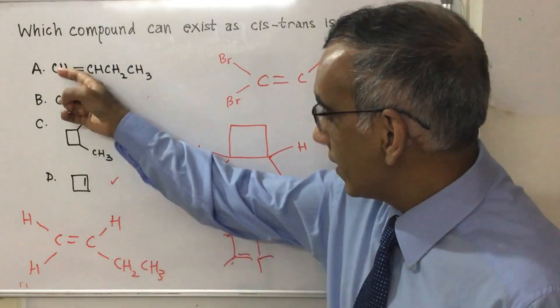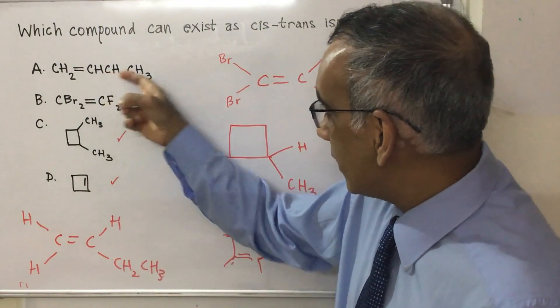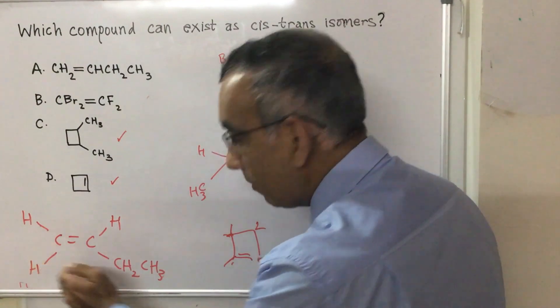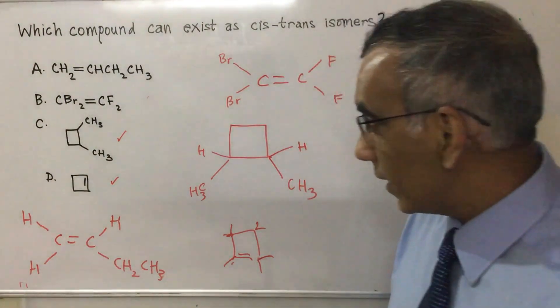this is the structure that you have. CH2, then the double bond, then a CH, then a CH2, CH3, which is all of this. So then these two being the same would mean that you won't have cis-trans isomerism or EZ isomerism.